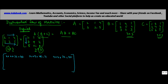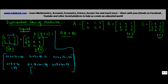Now the second row, first column: 3 into 2, 2 into 4, 5 into 8 — giving 54. Second row, second column: 3 into 7, 2 into 9, 5 into 12 — giving 99. Second row, third column: 3 times 2, 2 times 4, 5 times 8 — giving 54. So the left-hand side result is: [40, 71, 40 / 54, 99, 54]. Let's call this equation 1.